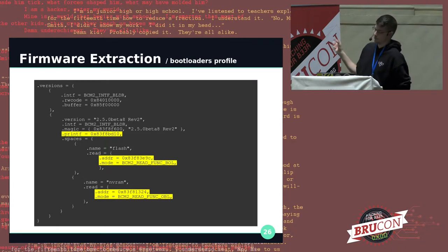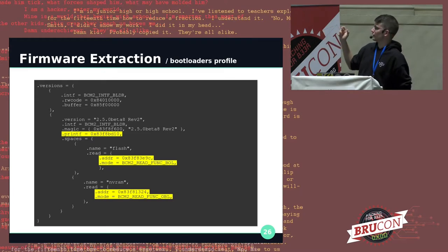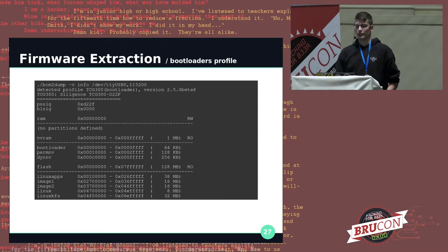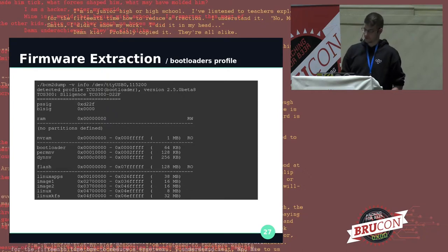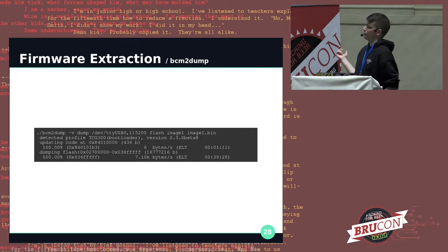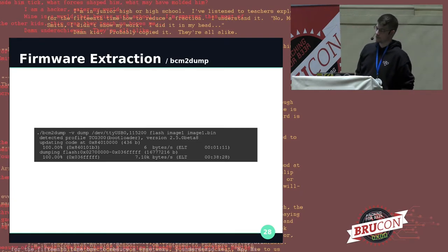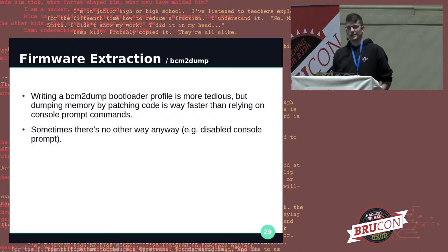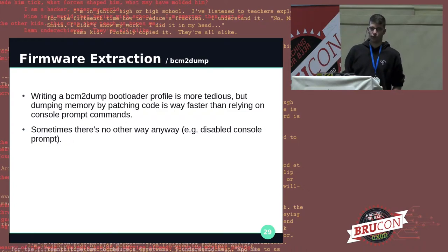An interesting thing is the magic field — you have an address and a value. The tool creates a string from that address, and if it matches the expected string, it will auto-detect the device. We can validate our profile using the auto-detection feature. We can see BCM2Dump in operation, first patching the code on the first three lines and then proceeding to dump the requested memory content. The process is more tedious but can be fully automated with a bit of Python and Radare2.